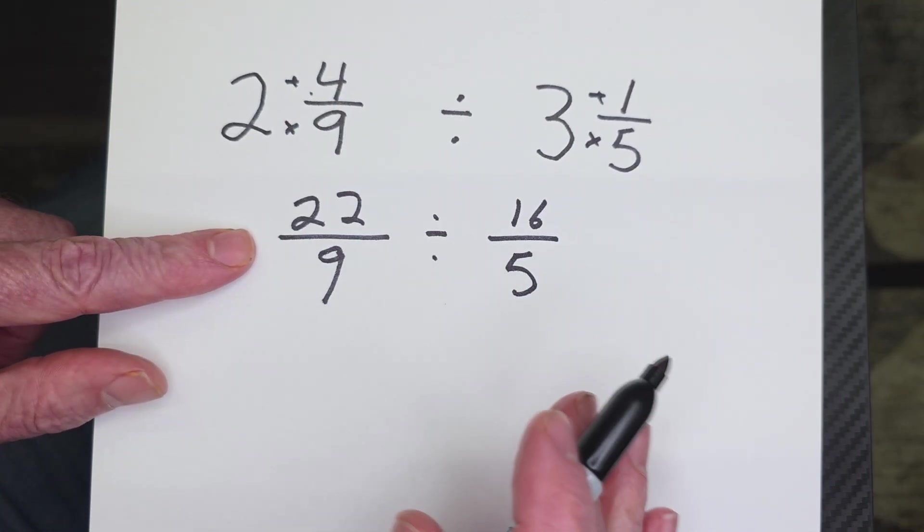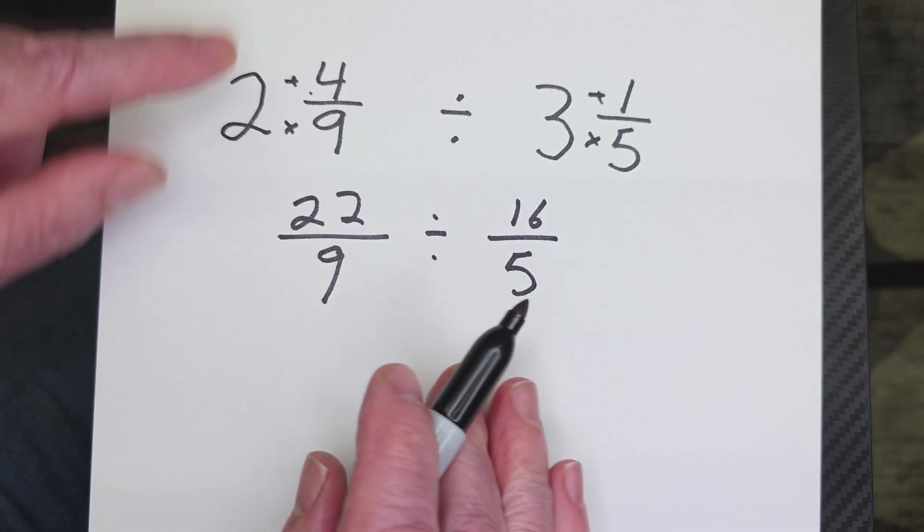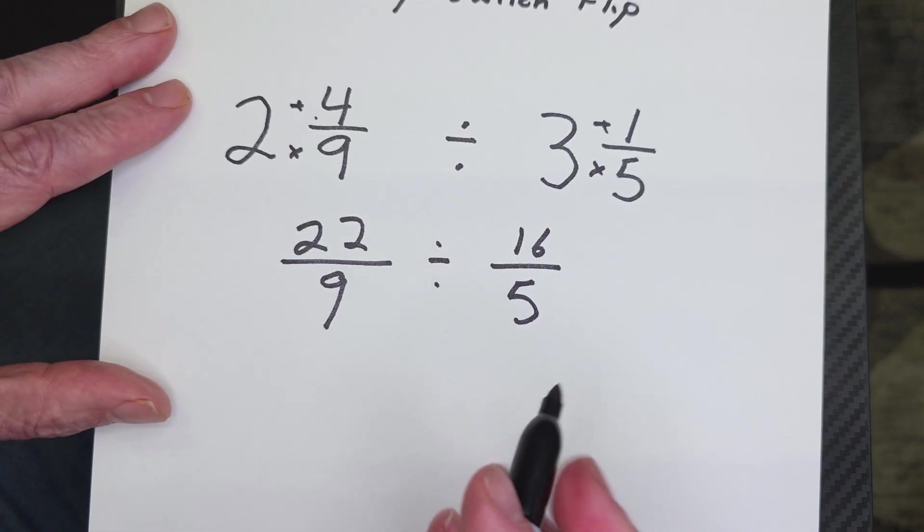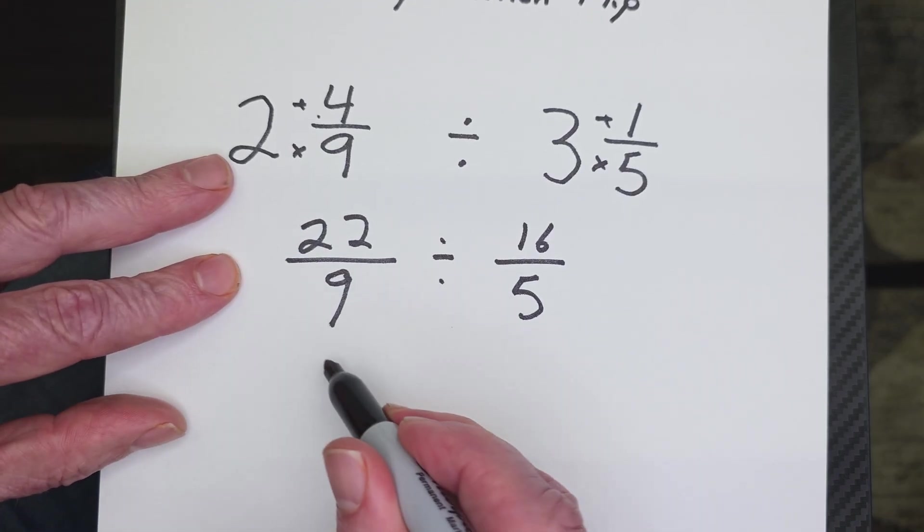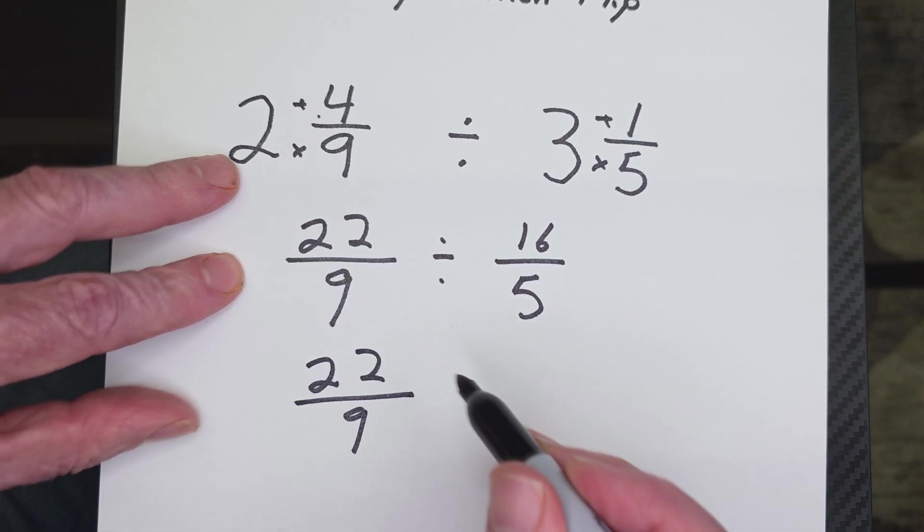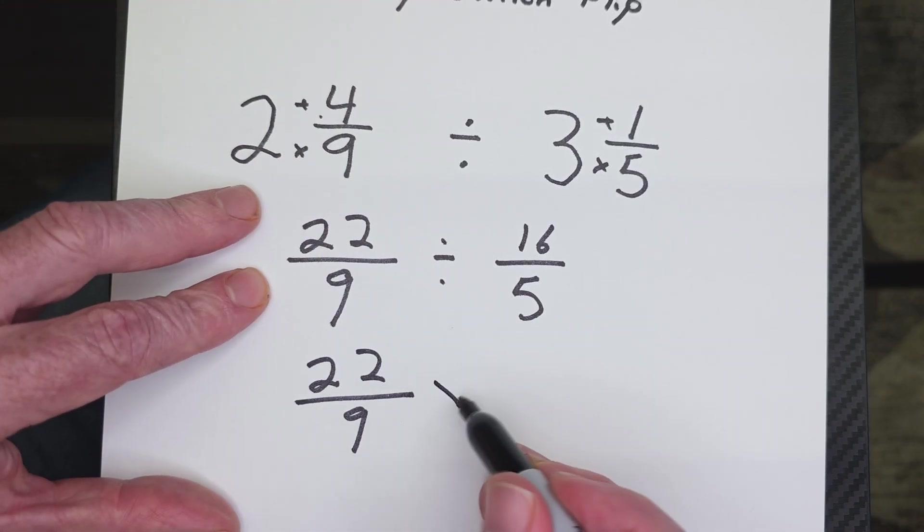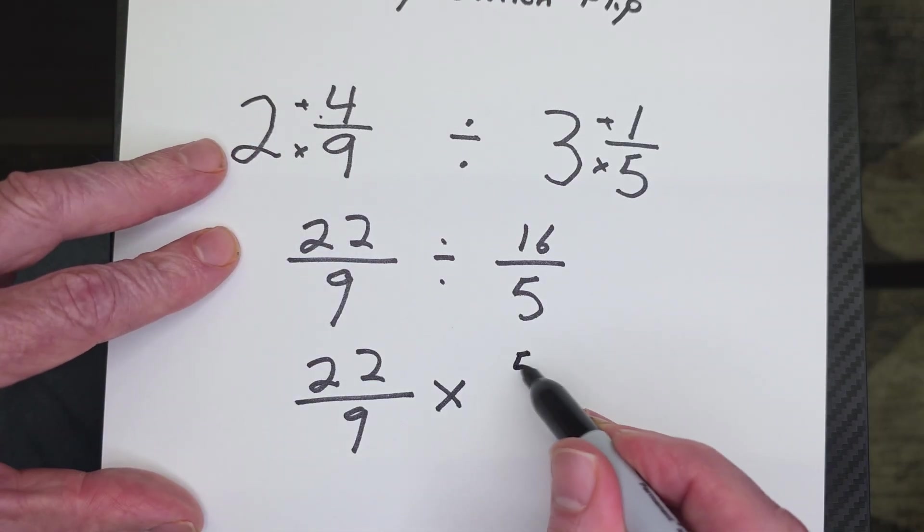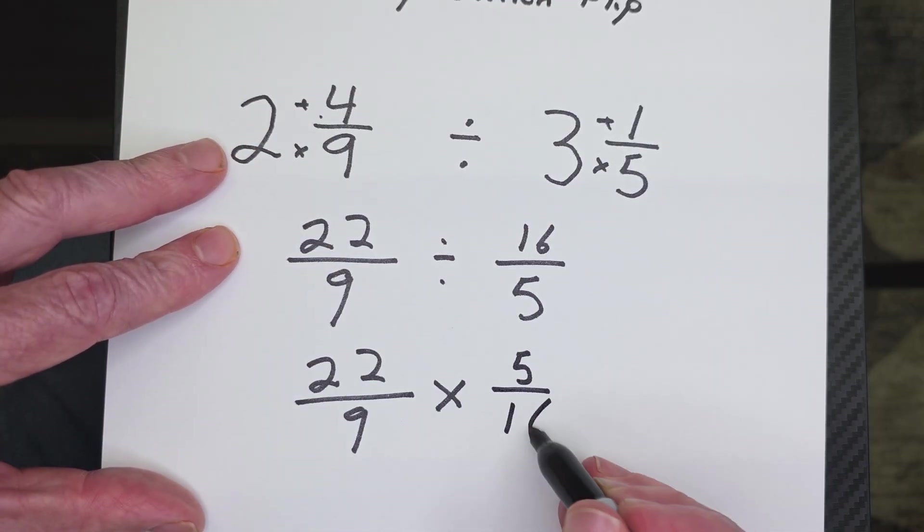All right. Now, can I, what do I do? What do I do? Now I need to keep, switch, and flip, don't I? Yeah. I need to do that. So now I'm going to go ahead and keep this number the same, 22 over 9. And now I switch, which would be multiplication. Now I flip. So this would be 5 here over 16.